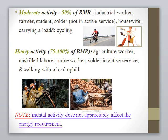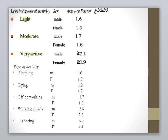Those who use their brain in work do not expend much energy. Light activity males have an activity factor of 1.5, females 1.5. Moderate activity males have a factor of 1.7, females 1.6. Very active males have a factor above 2.1, females above 1.9. The activity factor is used in the formula to calculate the energy required for 24 hours, depending on whether sleeping, lying, office working, or walking slowly.